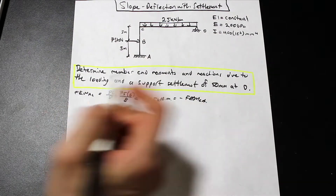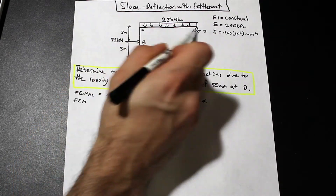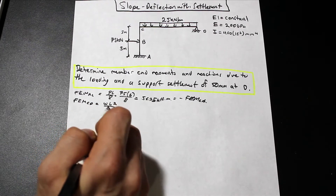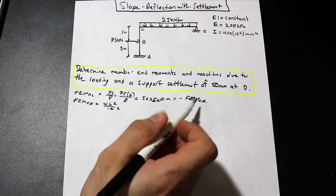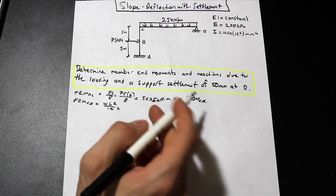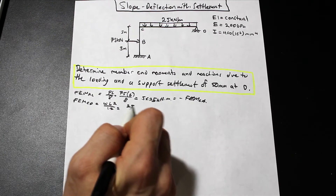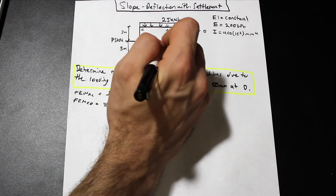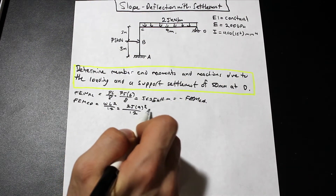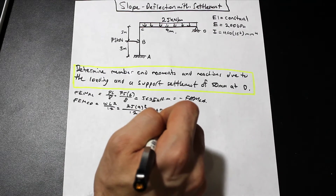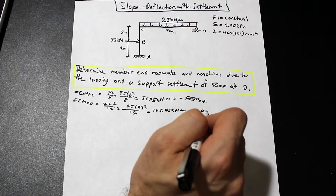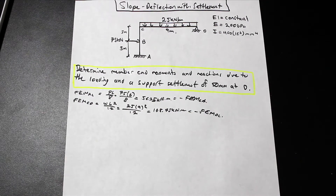FEM_AC equals negative FEM_CA because they are equal but in opposite directions. The fixed end moment for CD is WL² over 12 — if you don't know where these come from, there are tables in your textbook and in our previous videos. That gives 25 times 9 squared over 12, which equals 168.75 kilonewton meters, and FEM_CD equals negative FEM_DC.